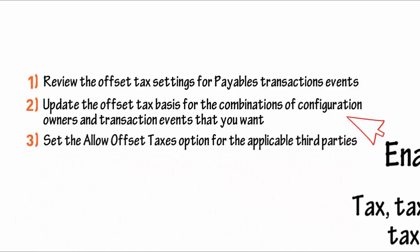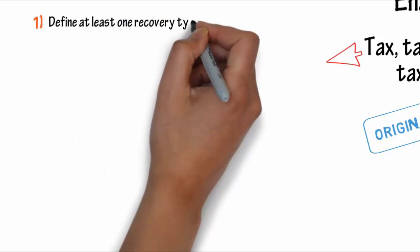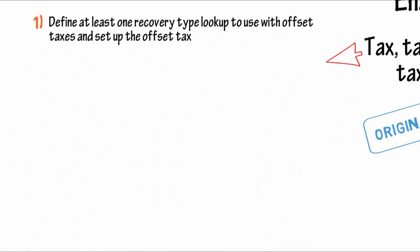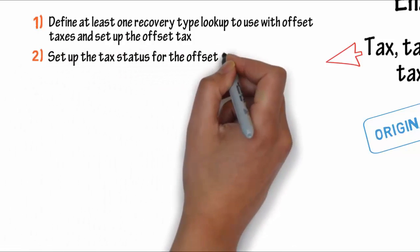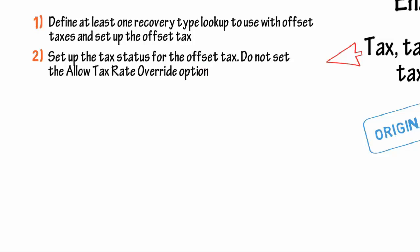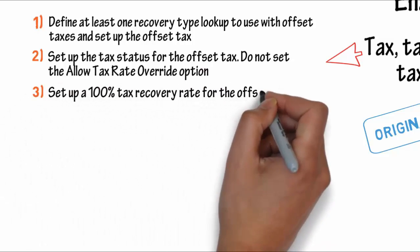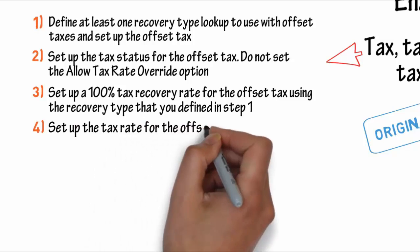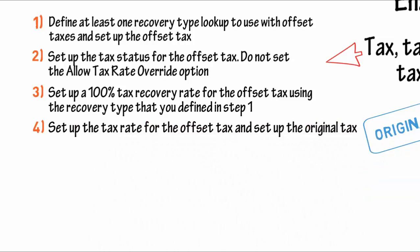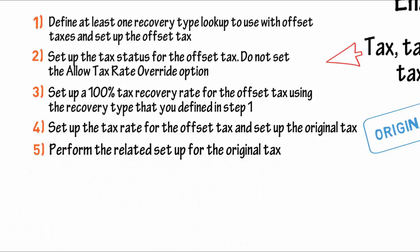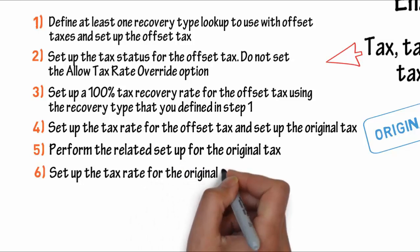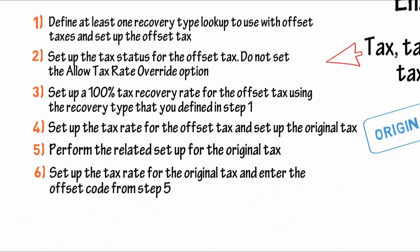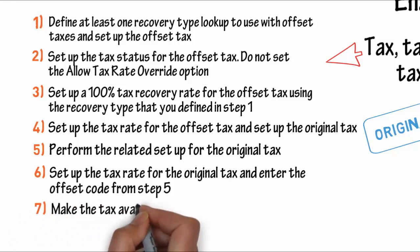You should set this option for each third party involved in offset tax transactions. To set up an offset tax, perform these tasks. First, define at least one recovery type lookup to use with offset taxes and set up the offset tax. Second, set the tax status for the offset tax — do not set the allowed tax rate override option. Then set up a 100% tax recovery rate for the offset tax using the recovery type that you defined in step 1. Next, set up the tax rate for the offset tax and set up the original tax. Fifth, perform the related setup for the original tax. Then set up the tax rate for the original tax and enter the offset rate code that you created in step 5. And last, make the tax available on transactions.